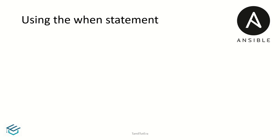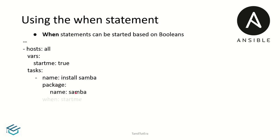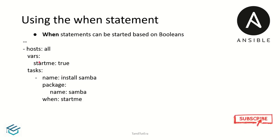Using the when statement — we will start with a boolean. We will declare the variables and set my_var to true. In a task, we will create the package name. When true, we will install the package. This is a simple example: my_var is true, when true, we will install the package.